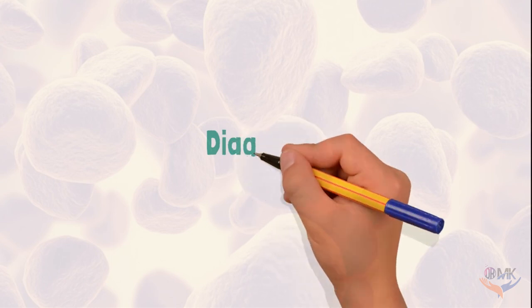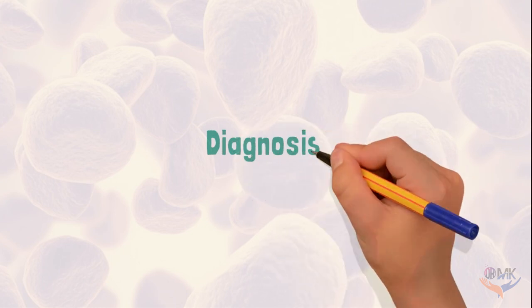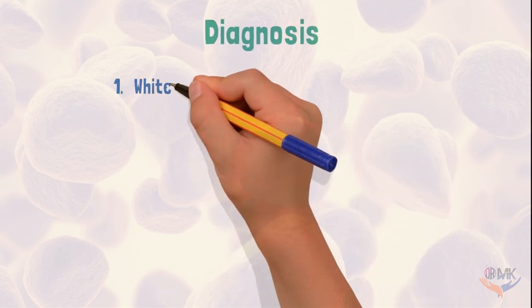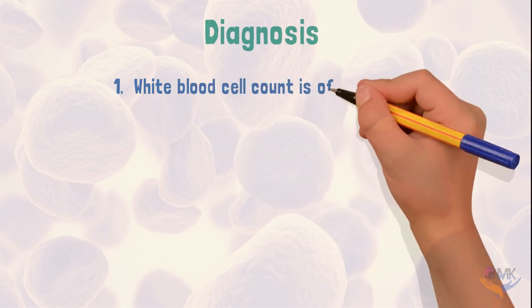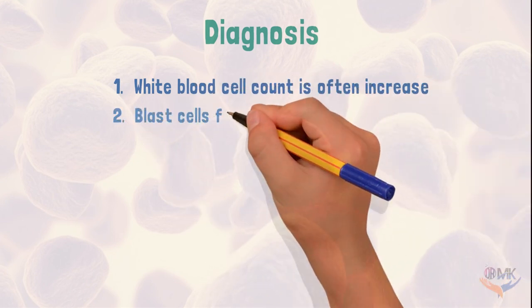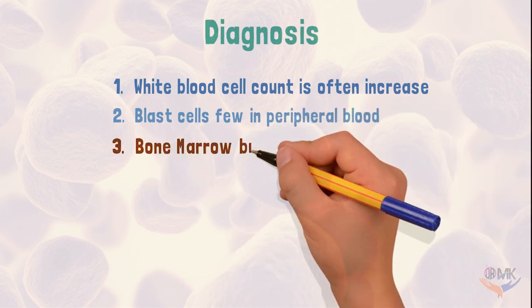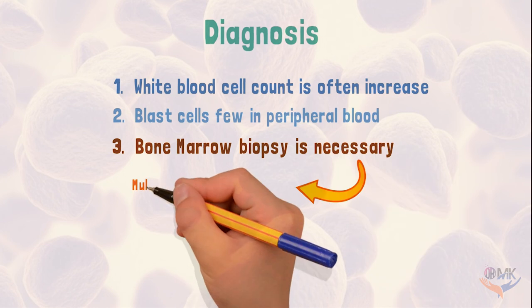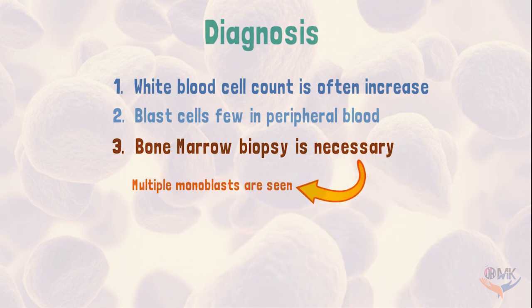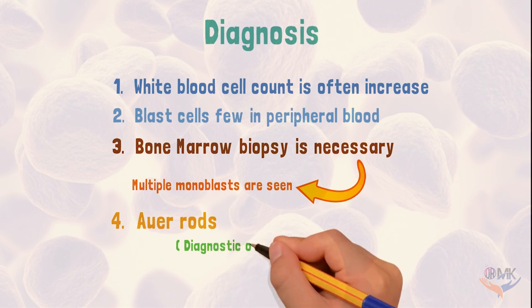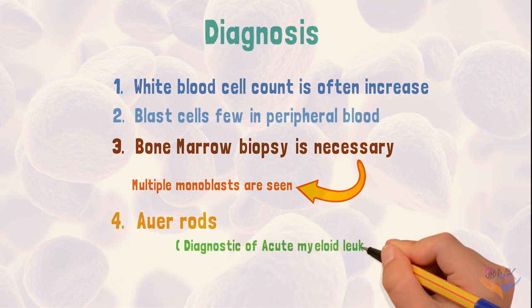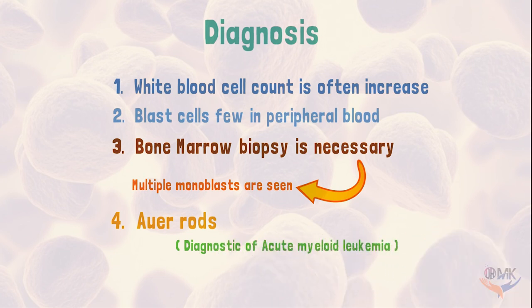Acute myeloid leukemia is diagnosed on the basis of white blood cell count, which is often increased. Blast cells are seen in peripheral blood. Multiple monoblasts are seen on bone marrow biopsy. And lastly, Auer rods, which are diagnostic of this disease — Auer rods are red-staining needle-like bodies seen in the cytoplasm of myeloblasts.